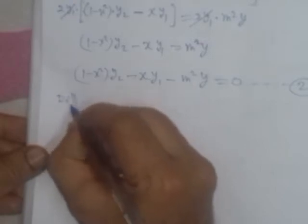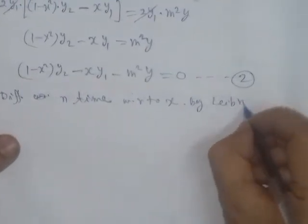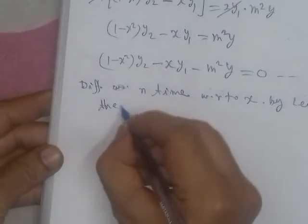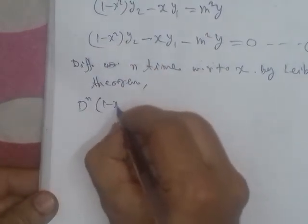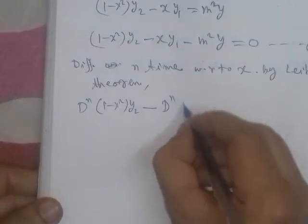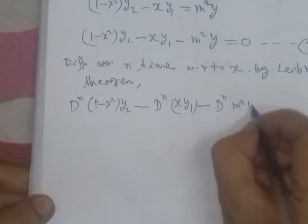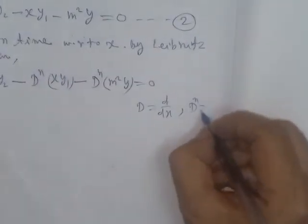Now we apply n-th differentiation to equation number 2. We differentiate n times with respect to x using Leibniz theorem. Leibniz theorem states that for the n-th differentiation of a product of two functions u and v, we expand using the binomial coefficients nc₀, nc₁, nc₂, and so on, taking successive derivatives of u and v respectively.